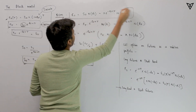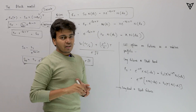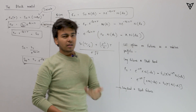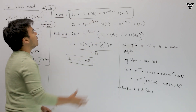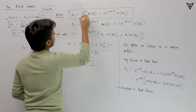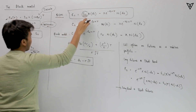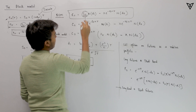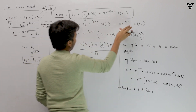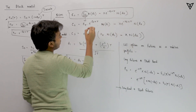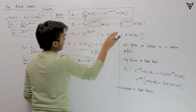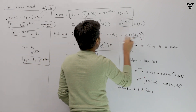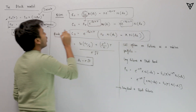In the BSM model, the call option value is S0 × N(d1) — where N(d1) represents the number of stocks to go long — minus X × e^(-rf × t) × N(d2), where N(d2) tells you how many bonds to go short. For the Black model, we replace S0 with F(t) × e^(-rf × t). Once we do that, the common factor e^(-rf × t) can be factored out, leaving us with: e^(-rf × t) × [F(t) × N(d1) − X × N(d2)]. This is the call option value on futures.